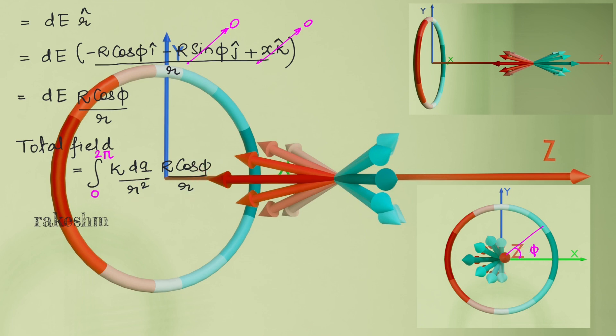This phi here is varying from 0 to 2 pi. Putting the value of dq as lambda naught cos phi into r d phi. In the next step I'm moving the constants out of the integral and we have integral cos square phi d phi.